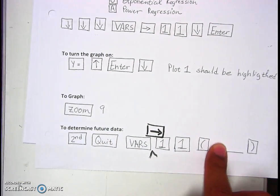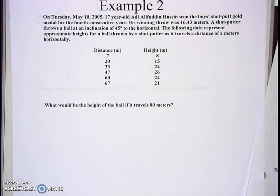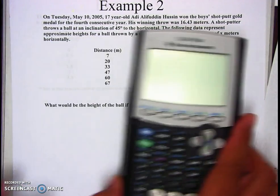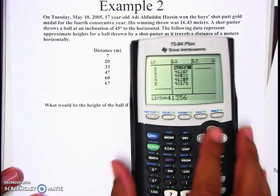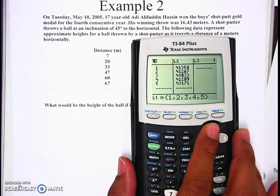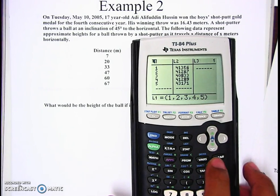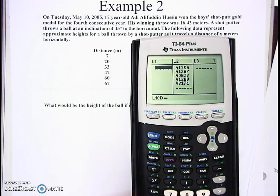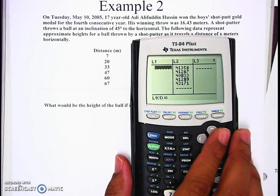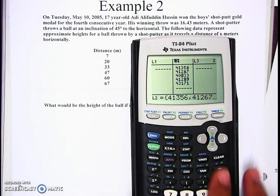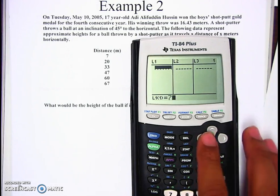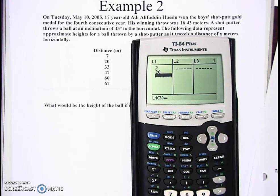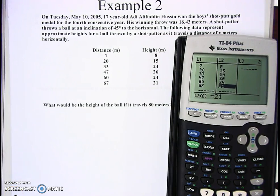When we put our numbers in, we're going to hit stat, edit. To clear this out, go up to L1, hit clear and enter. Don't hit delete or it'll get rid of L1 completely. Then go to L2, hit clear and enter. Put the numbers in and make sure the data matches up.